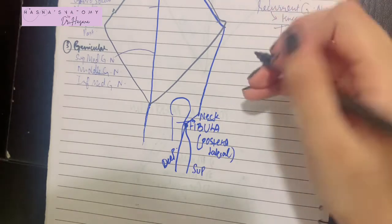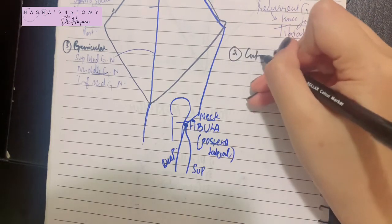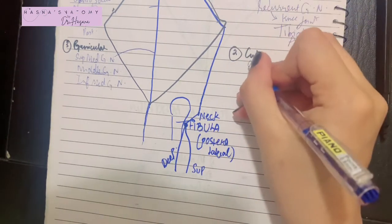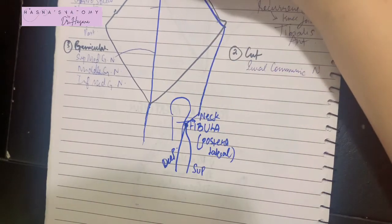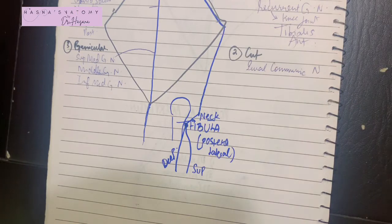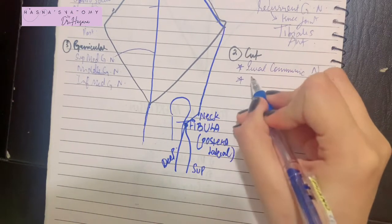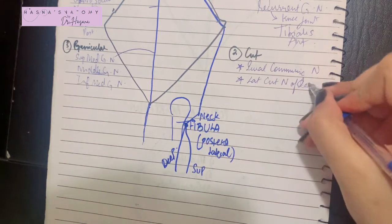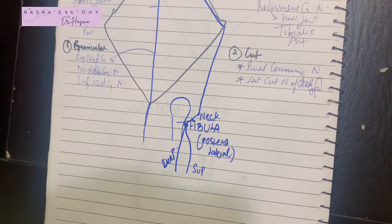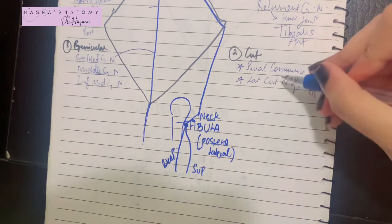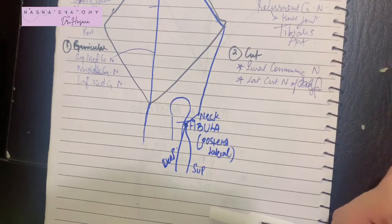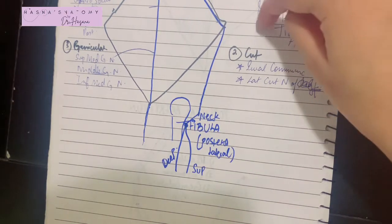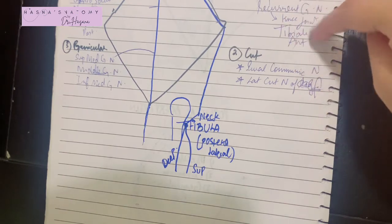The common peroneal nerve also gives cutaneous branches. The first is the sural communicating nerve, which merges with the medial sural cutaneous nerve to form the sural nerve. It also gives the lateral cutaneous nerve of the calf, which supplies the skin of the upper two-thirds of the lateral side of the leg. Importantly, the common peroneal nerve does not have any exclusive muscular branches — the only near-muscular branch is the recurrent genicular supplying tibialis anterior.